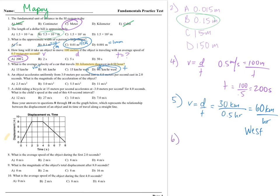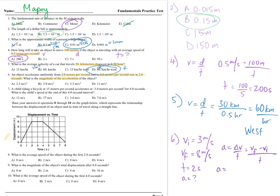Number six: an object accelerates uniformly from 3 meters per second to 8 meters per second east in 2 seconds. What is the magnitude of the acceleration? Initial velocity is 3 m/s, final velocity is 8 m/s, time is 2 seconds. Acceleration equals change in velocity over time: (8 − 3) / 2 = 5 / 2. A equals 2.5 meters per second squared.